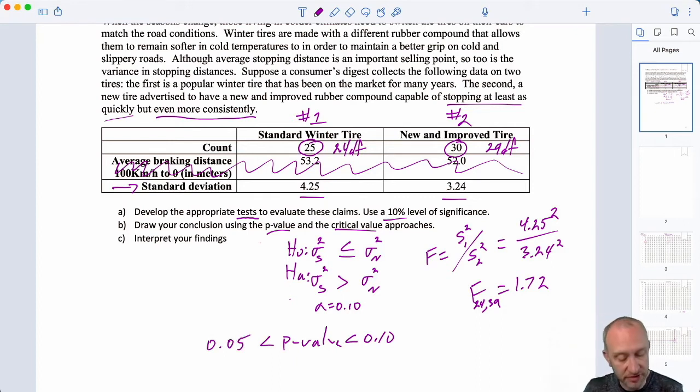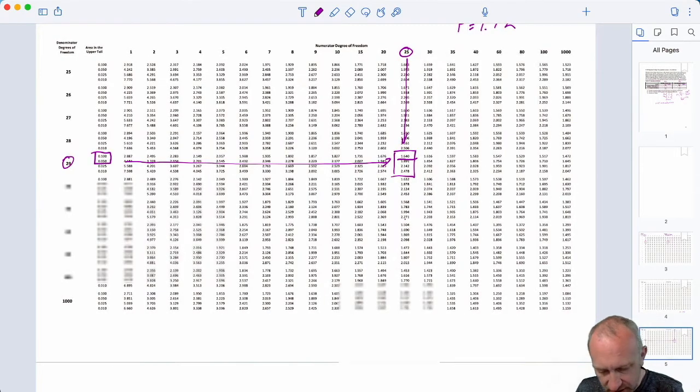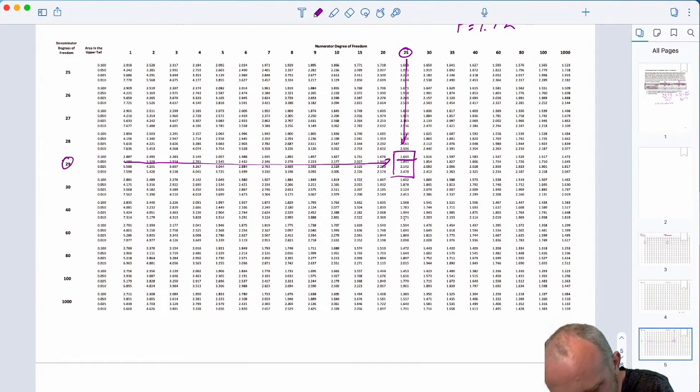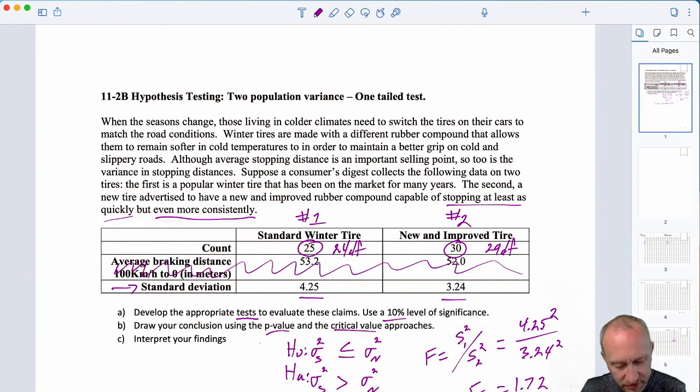If we use the critical value approach, coming back here, that critical value, well, alpha is not 0.05, alpha is 0.1. So, that critical value is 1.64.